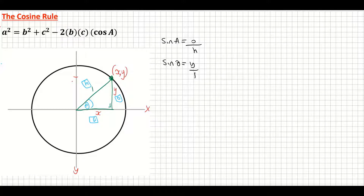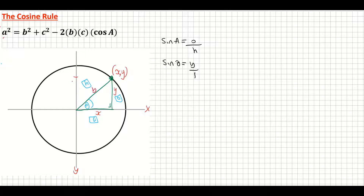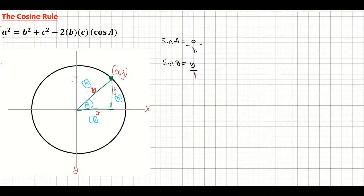Now, when using the cosine rule we're not going to use the unit circle with radius 1. Instead, we'll use a circle with a radius of length B. So the sine ratio becomes sine theta equals y over B. Using simple cross multiplication, that gives us y equals B times sine theta.